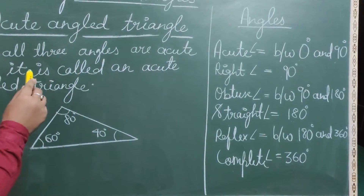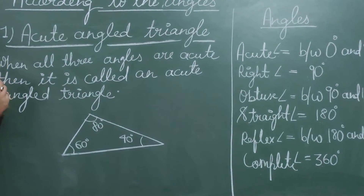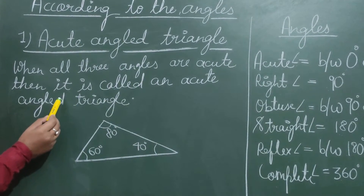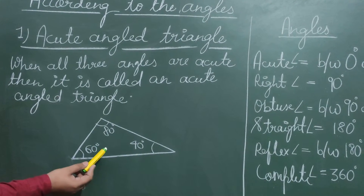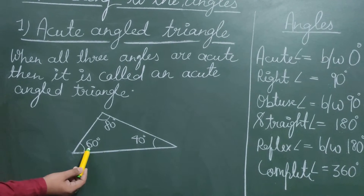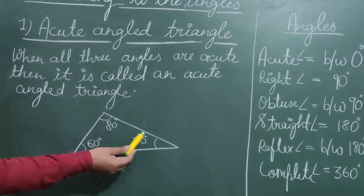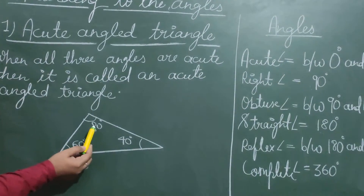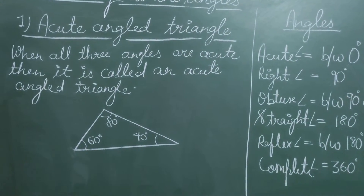Now, an acute angle triangle — when all three angles of a triangle are acute, it is called an acute angle triangle. For example, if the angles are 60 degrees, 80 degrees, and 40 degrees, all three angles are between 0 and 90 degrees, so all three are acute angles. That is why this triangle is called an acute angled triangle.